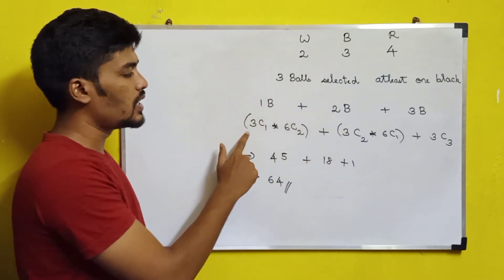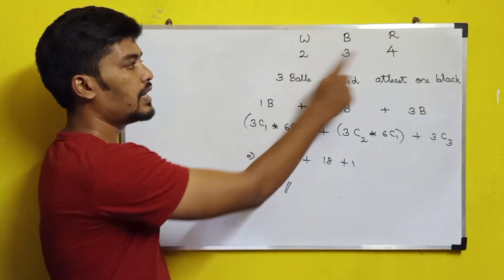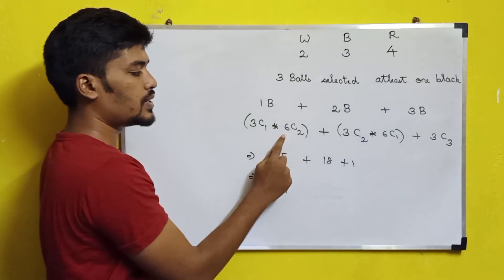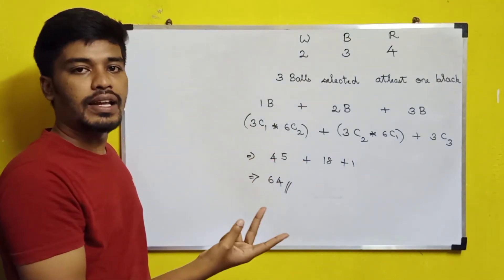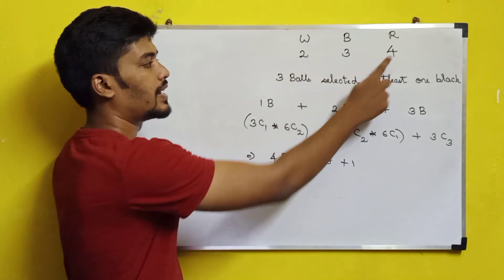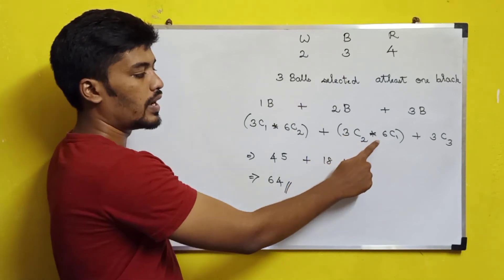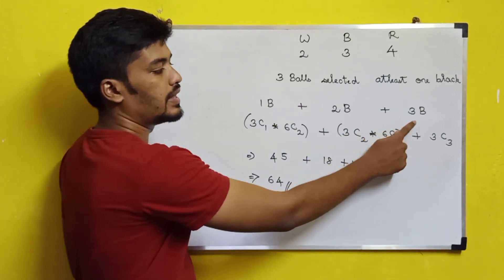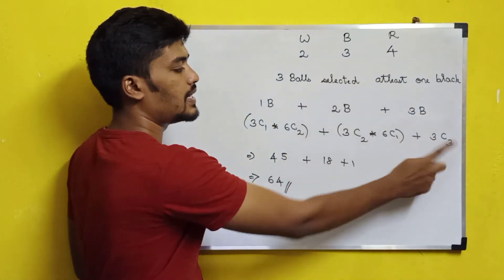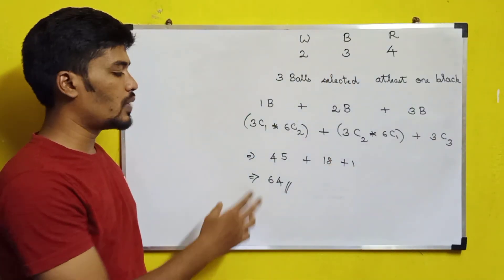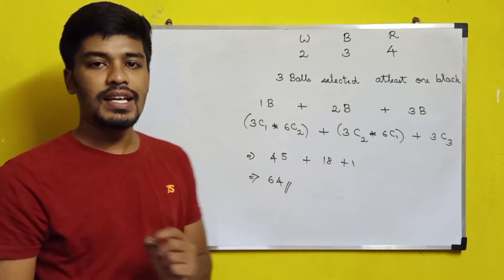We consider three cases. One black ball: 3C1 × 6C2 = 3 × 15 = 45. Two black balls: 3C2 × 6C1 = 3 × 6 = 18. Three black balls: 3C3 = 1. Adding these: 45 + 18 + 1 = 64. That is the answer to the third question.